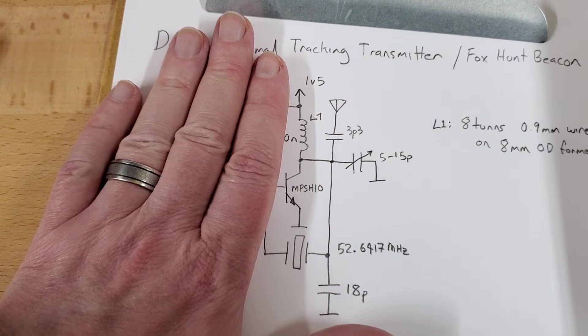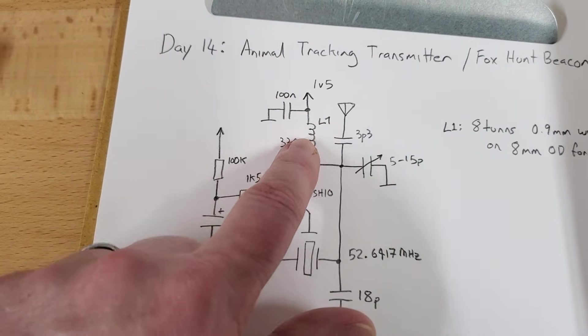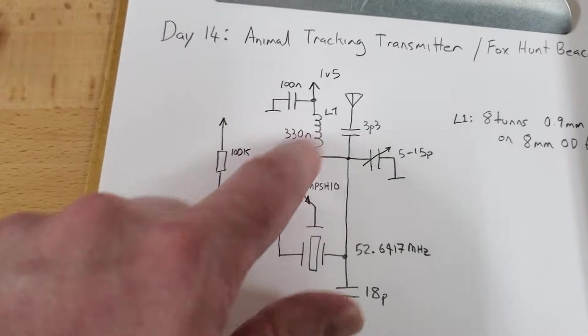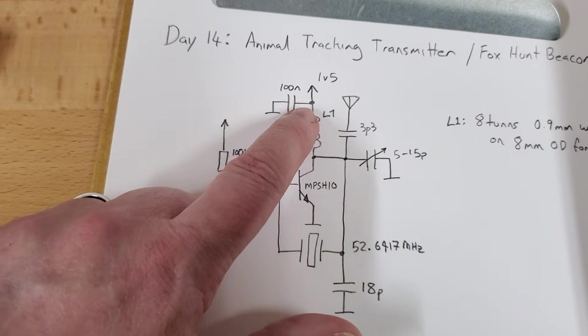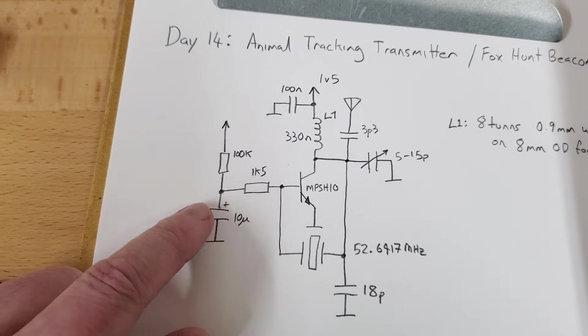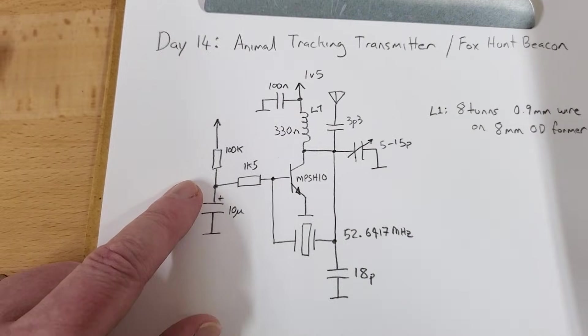Basically, if you look at this, it's a pierce oscillator, right? It's a crystal pierce oscillator, and you've got the overtone selector or resonator in the collector circuit. The coupling capacitor here, just to stiffen the rails at RF, and this is also a squigging circuit, much like day 13s.